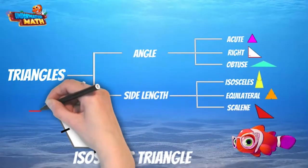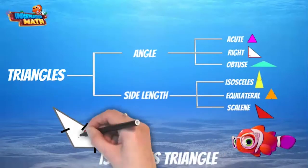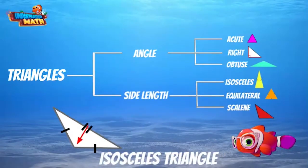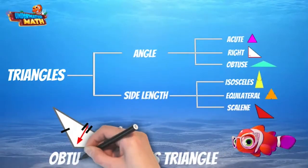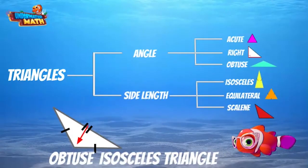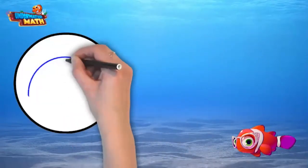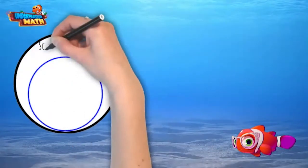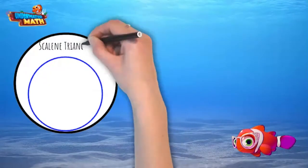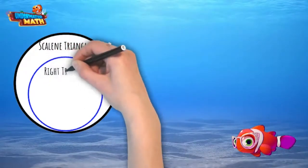I see two acute angles and one obtuse angle. Since it has an obtuse angle, it must be an obtuse triangle. This is an obtuse isosceles triangle.